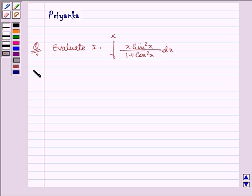Hi and how are you all today? The question says, evaluate I equals integral from 0 to π of x sin²x over 1 plus cos²x dx.